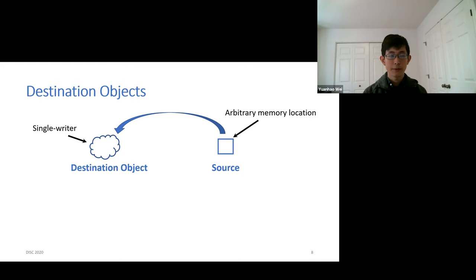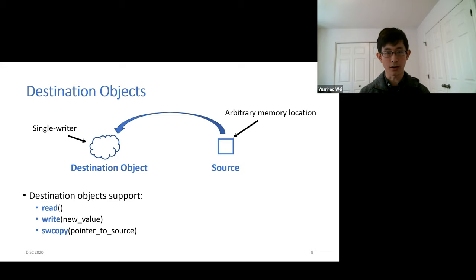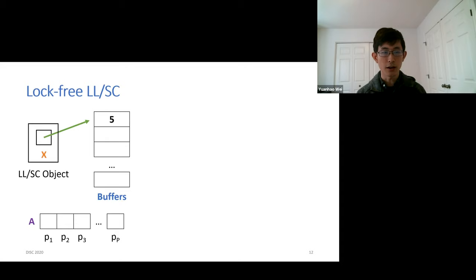Our LLSE implementation depends heavily on a new type of object called a destination object. These support read, write, and SW-copy (single-writer copy). The copy operation atomically reads a memory location and writes its value into a destination object; crucially, both the read and write appear to happen at the same time. We show how to implement all three operations in a wait-free manner in constant time, using M plus P-squared space for M destination objects, where P is the number of processes.